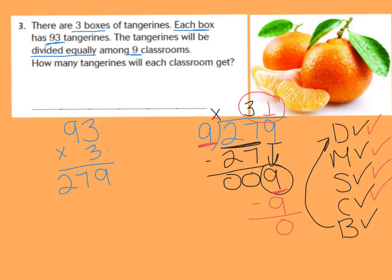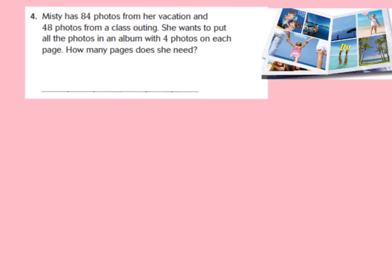So that means that there will be 31 tangerines given to each classroom. And we solved that by multiplying first to find our total tangerines, and then dividing it equally among the 9 classrooms.